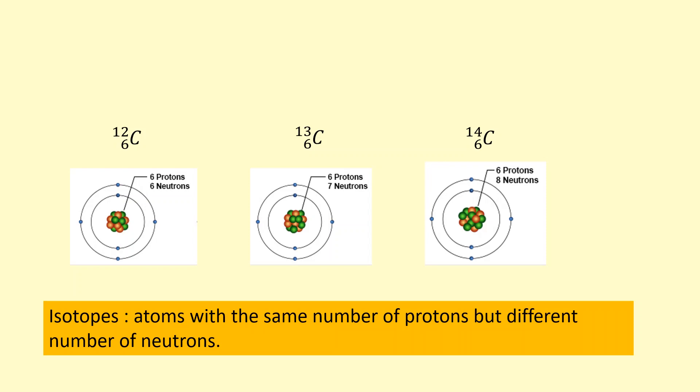Carbon-14 has two extra neutrons. Because it's got those two extra neutrons, it makes the nucleus unstable. The nucleus will decay randomly and spontaneously.